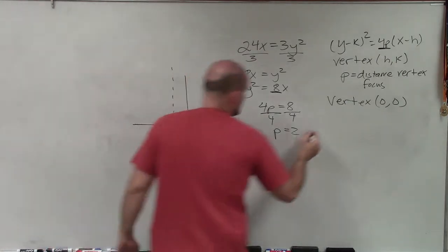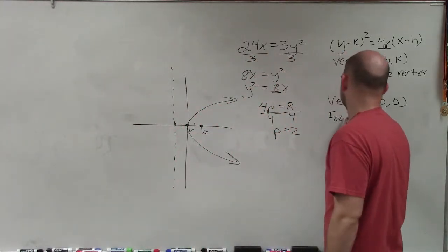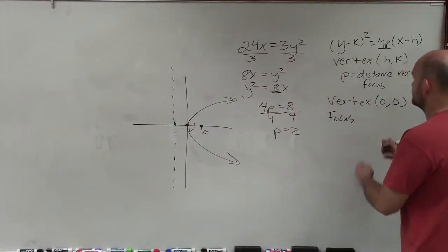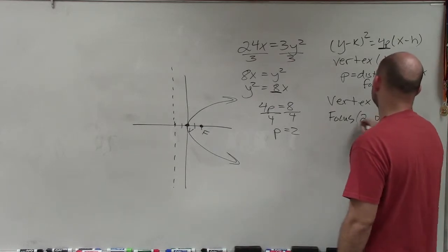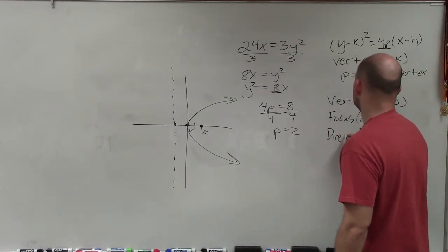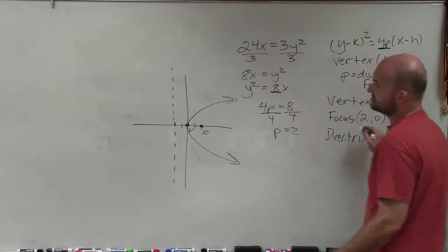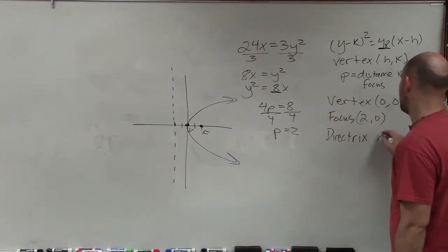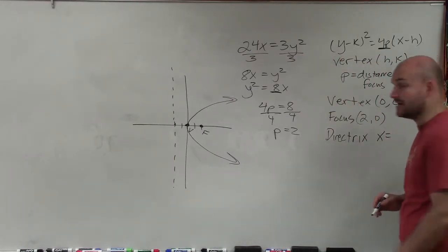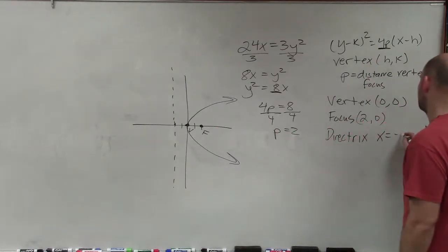To write the equation of the focus, I went from the vertex two units to the right. So the focus is (2, 0). For my directrix, notice that it is a vertical line. So I have x = -2.